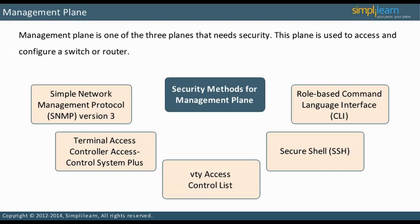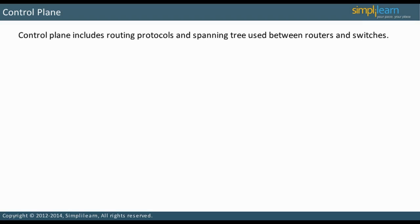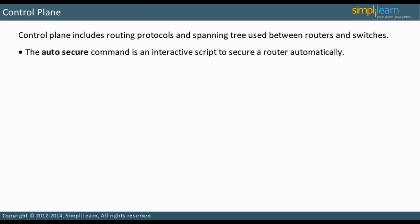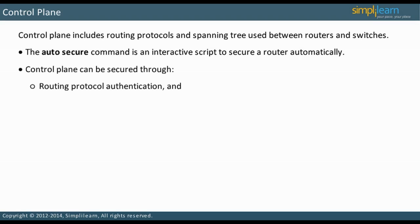The control plane includes routing protocols and spanning tree used between routers and switches. The auto-secure command is an interactive script used to automatically secure a router. Other security measures include routing protocol authentication and CPU and memory thresholding.